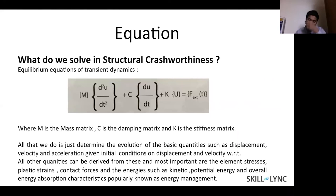And what is acceleration? Acceleration is nothing but the second-order derivative of displacement. So that's why you have d²u/dt². And then you have C times du/dt. So what is du/dt? That's the velocity. What is C? C is the damping matrix, and K at the end of the day is the stiffness matrix.